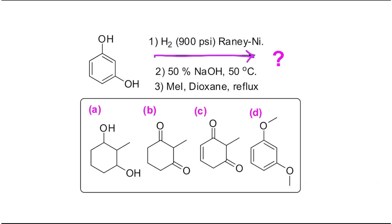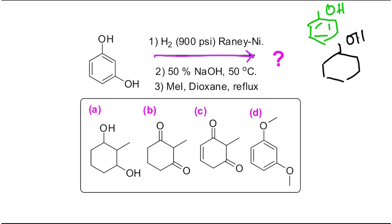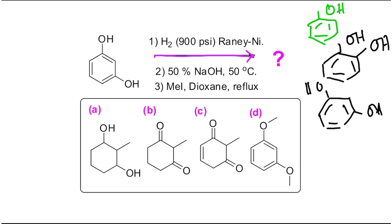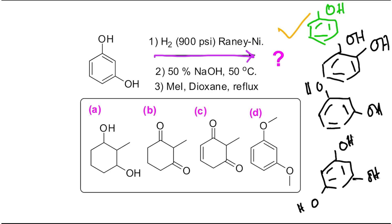The question is: what happens if resorcinol is treated with hydrogen and Raney nickel? Before going into details, you need to know the concept of keto-enol tautomerism. The first member is phenol, the second is catechol - both are dihydroxy aromatic compounds. Next is resorcinol, and the one-four para compound is hydroquinone. Comparing phenol, resorcinol, and phloroglucinol: phenol has 100% enol form.